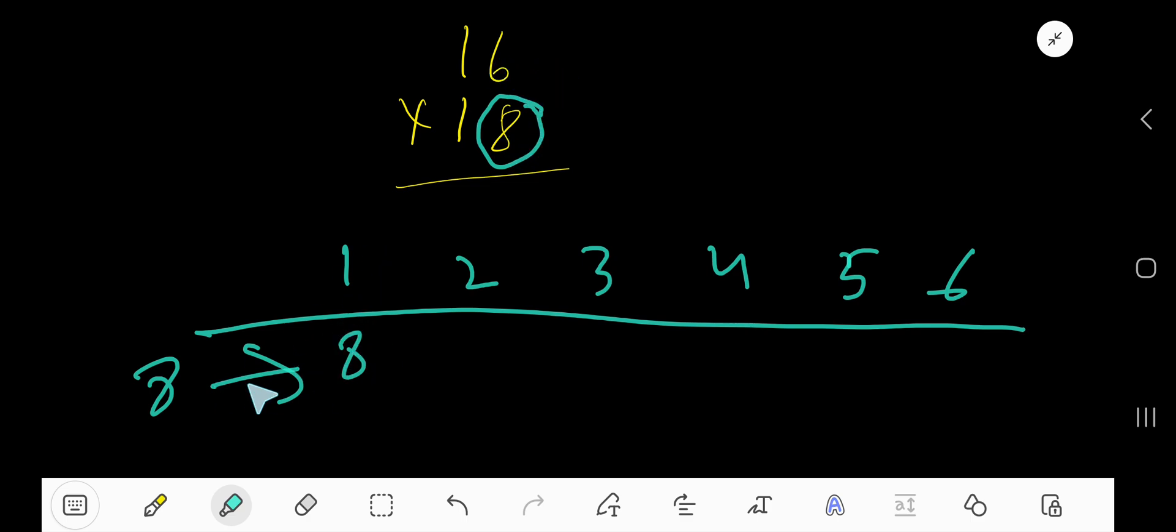8 times 1 is 8. 8 times 2 is equal to 16, just add 8 with this 8, we are getting 16.